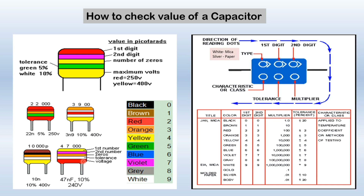Some capacitors have colored dots on them. We read the value from the top-left of the capacitor. The first dot represents the type of capacitor: white means mica, silver means paper. The second dot represents the first digit, the third dot the second digit. The fourth dot represents the multiplier, the fifth dot represents the tolerance, and the sixth dot represents the characteristic or class of the capacitor, which indicates the temperature coefficient.